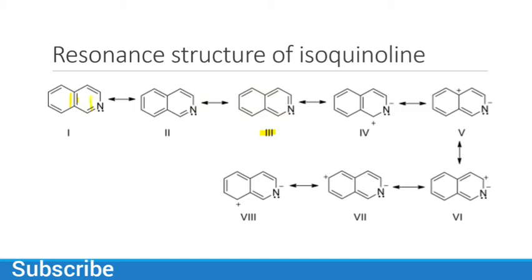Going back to structure one: this double bond shifts its electrons towards nitrogen, giving a positive charge on carbon and a negative charge on nitrogen, as shown in the picture. Then this bond shifts in this direction, creating a double bond here and a positive charge here, as shown. Next, this bond shifts again, placing the positive charge at a new position, as shown in the picture. Then this bond moves, again placing a positive charge, with another possibility being that this bond moves in a different direction, as shown.